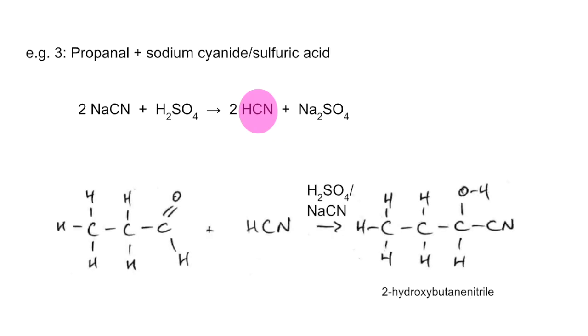There's the overall equation. In this example we're getting 2-hydroxybutanenitrile - a hydroxy nitrile. The important thing is we've extended the carbon chain by 1 carbon, going from 3 carbons in propanal to 4 carbons in the product. That's really important in organic synthesis.